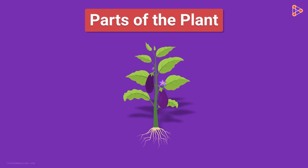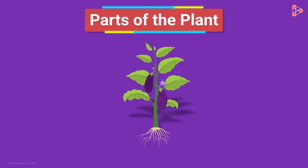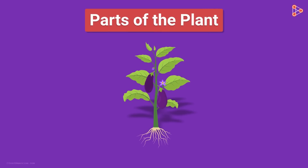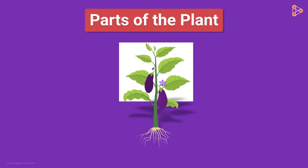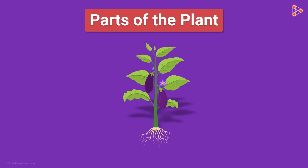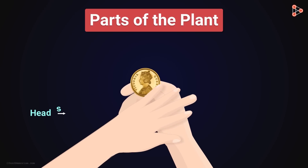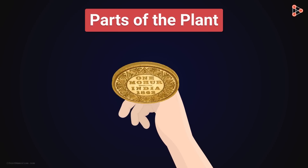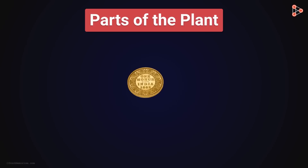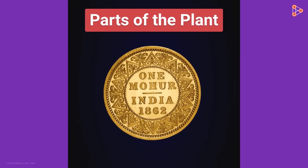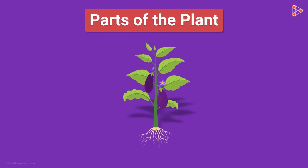In this and in the upcoming sessions, let's learn and understand each part of the plants in detail. And where do we begin — the top or the bottom? Let's toss and choose which part to begin with. If it's heads, we begin with the shoot, and if it's tails, we begin with the roots. Here we go — we've got tails! So now let's begin with studying a typical plant, beginning with the roots and moving to the shoots.